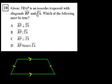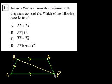They say RP and TA are diagonals of it. So let me draw that. This is T, R, A, P is the trapezoid. Let me draw the diagonals. RP is that diagonal, and TA is this diagonal. Let's see what we can do.